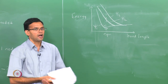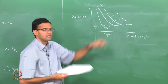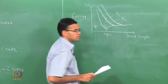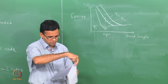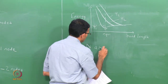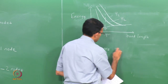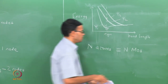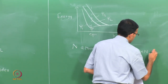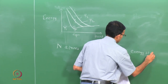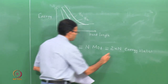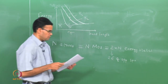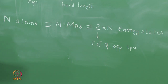For 4 hydrogen atoms you get 4 molecular orbitals, for 5 you get 5, and so on. As the number of atoms increases, you get more lines on the energy vs. bond length diagram. In general, n atoms give n molecular orbitals and 2n energy states total — the factor of 2 because each molecular orbital can hold 2 electrons of opposite spin.